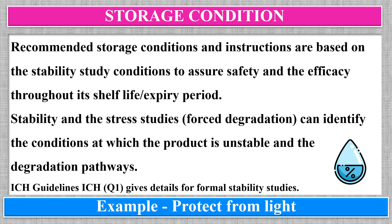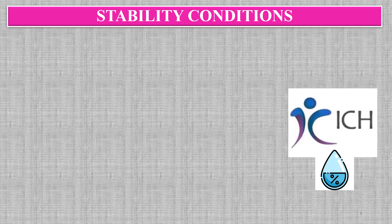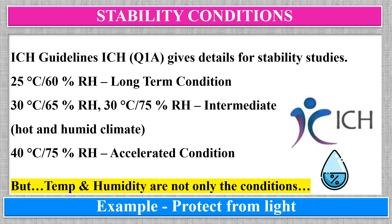For formal stability studies, ICH guideline Q1 is followed. This guideline provides information on formal stability studies. The conditions are: 25°C/60% RH for long-term storage condition, 30°C/65% or 30°C/75% RH for intermediate condition based on climatic zones — 30°C is considered for hot and humid climates — and 40°C/75% RH as the accelerated condition, which is accepted globally to study product stability.